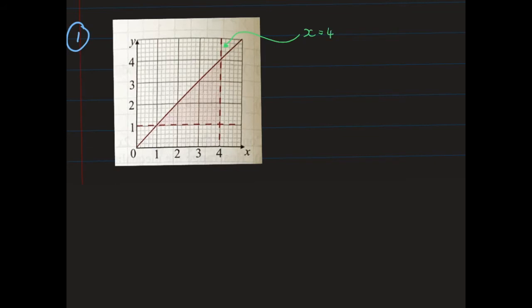It's a dashed line, so I know this is going to be a strict inequality. Now looking at the horizontal line, I can see that everywhere along this line y is equal to 1, so this line is y equals 1. Again, it's a dashed line, so I know that this is a strict inequality.